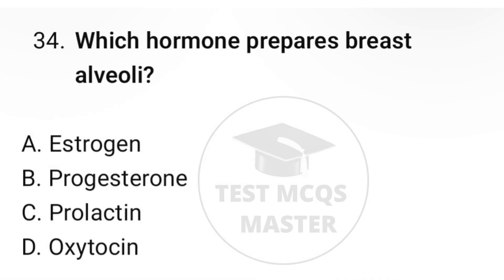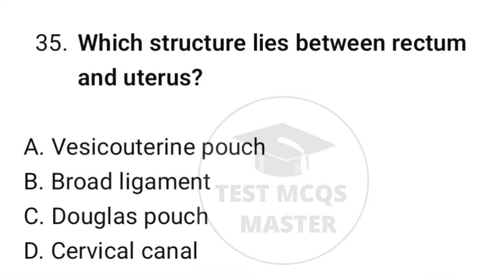Question number thirty-four: which hormone prepares breast alveoli? The correct option is B, progesterone. Question number thirty-five: which structure lies between the rectum and the uterus? The correct option is C, pouch of Douglas.